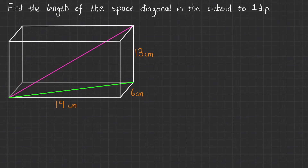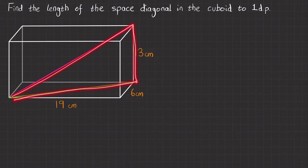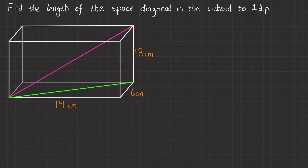Now to find that length, we need to use knowledge we already have. We know quite well how to deal with 2D shapes, so we're going to use that knowledge and extract the 2D shapes to be able to work out the values. If we want this pink line, we can see that if it goes down and across this green line, this plane is actually a 2D shape, which we can redraw to look like this.